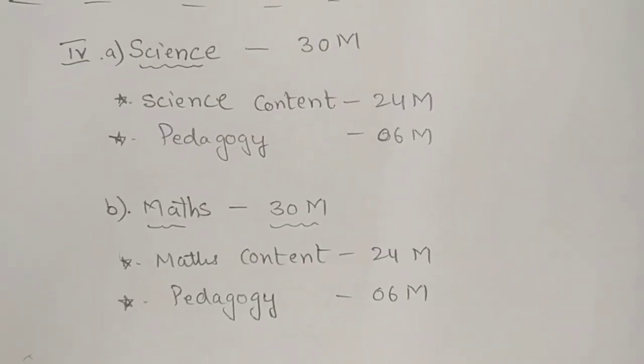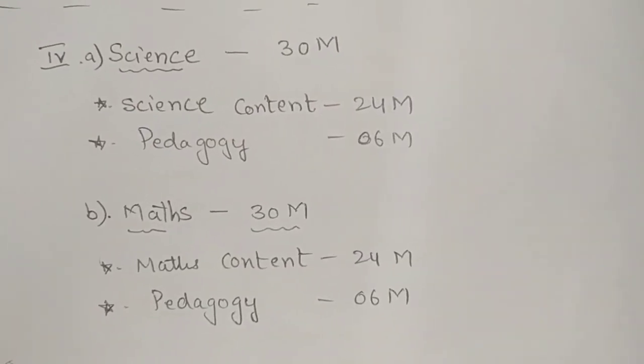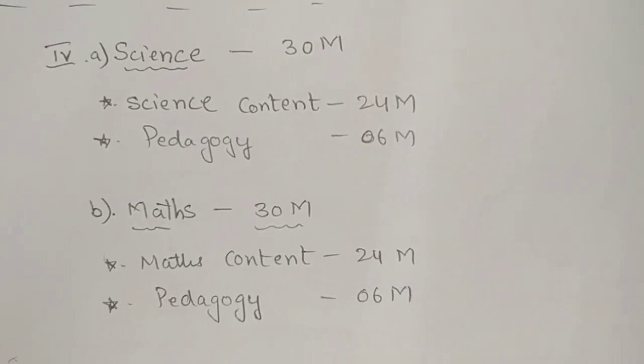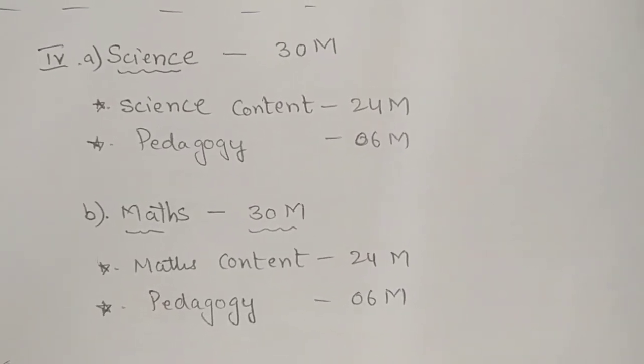Fourth one is for maths and science background students. Science will be for 30 marks. In this also science content 24 marks, pedagogy 6 marks.